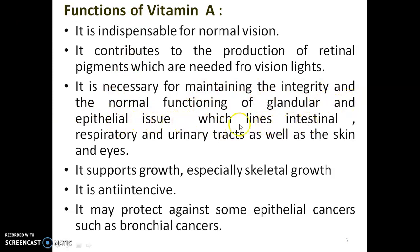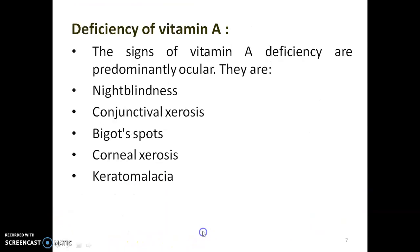Vitamin A is necessary for maintaining the integrity and normal functioning of glandular and epithelial tissues lining the intestinal, respiratory, and urinary tracts, as well as the skin and eyes. It supports growth, especially skeletal growth. It is also antioxidant and may protect against some epithelial cancers such as bronchial cancers. Deficiency of vitamin A: the signs are predominantly ocular — night blindness, conjunctival xerosis, Bitot's spots, corneal xerosis, and keratomalacia.